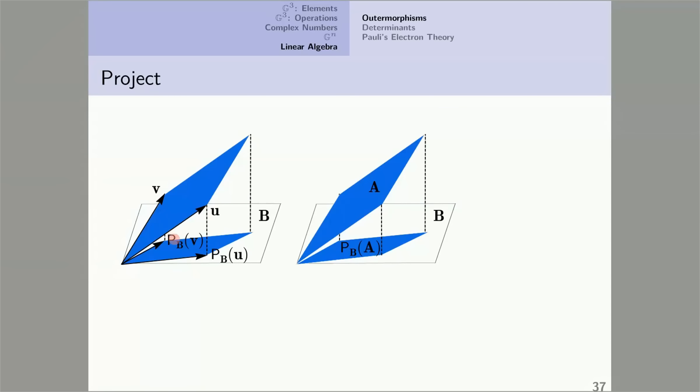Now notice the projection down here is obtained by taking the outer product of the projection of U with the projection of V. In other words, we have this situation.